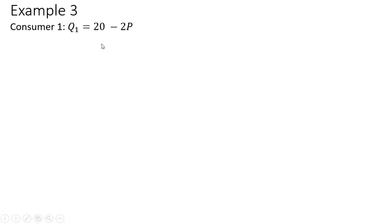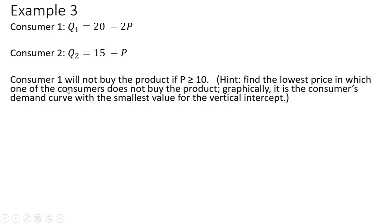In example three, consumer one's demand and consumer two's demand are given. This is a little more challenging because these consumers have different demand functions, so getting the market or aggregate demand is more complex. We must consider the fact that some consumers might not be in the market if the price rises above a certain level. Consumer one will not buy the product if the price is greater than or equal to $10. The hint here is to find the lowest price at which one of the consumers does not buy the product.